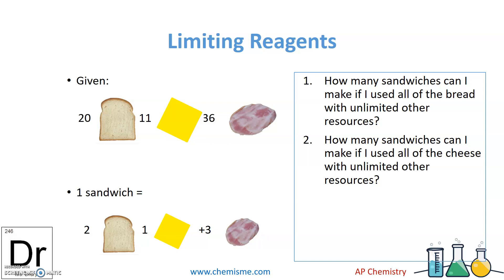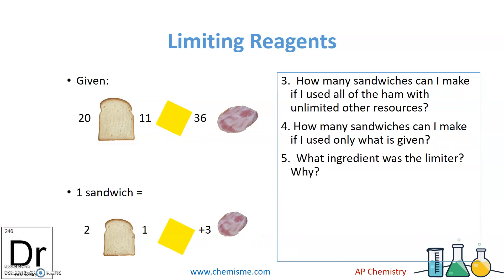In the real-world example, you have at home 20 pieces of bread, 11 cheeses, and 36 ham slices. A regular ham sandwich requires two pieces of bread, a slice of cheese, and three slices of ham — no more, no less, so every person has the same sandwich. How many sandwiches could I make if I only look at the bread? With 20 pieces and needing two per sandwich, I could make 10 sandwiches.